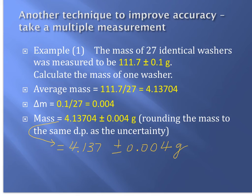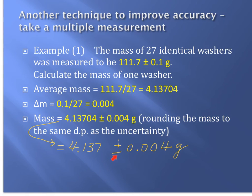Combining both results, the mass of one washer equals 4.13704 ± 0.004 grams. The important step is rounding the mass value to the same decimal places as the uncertainty. The uncertainty is to three decimal places, so the value is also rounded to three dp. The correct final answer is 4.137 ± 0.004 grams.